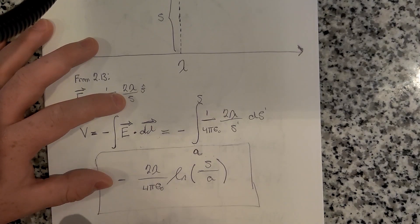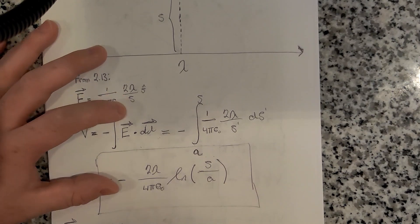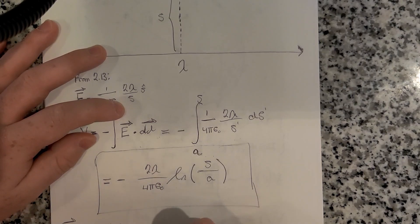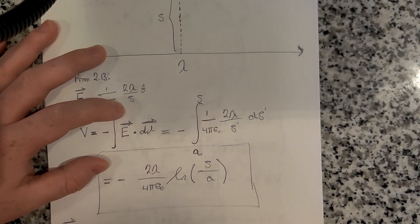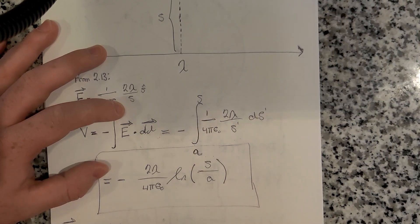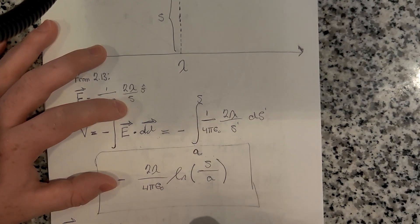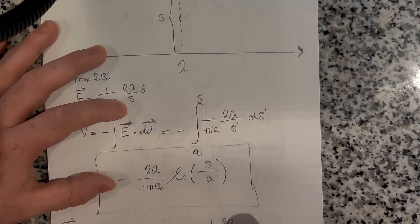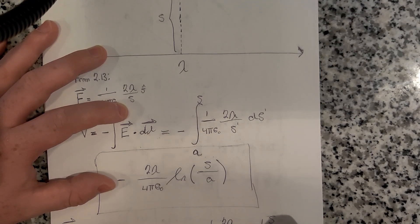So let's write that here: E equals minus gradient of V. Let's calculate the minus gradient of V. This minus sign is going to cancel out with this minus sign, and then we'll just have the gradient of 2λ over 4πε₀ natural log of s over a.